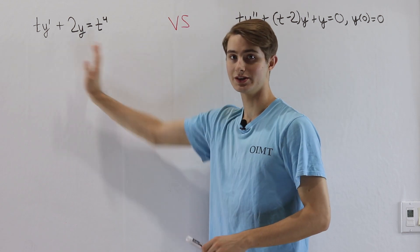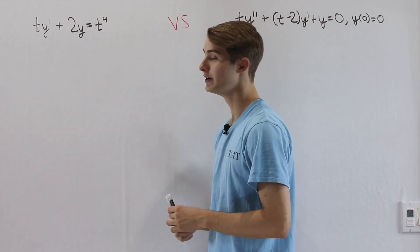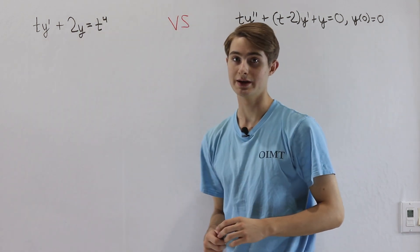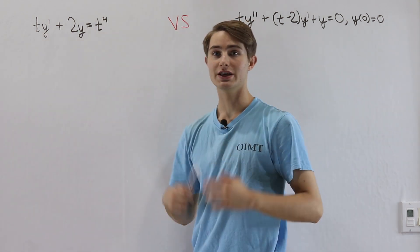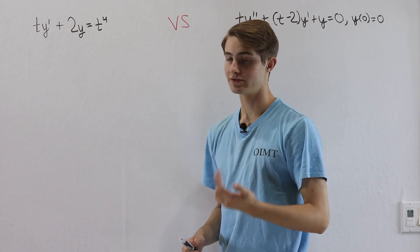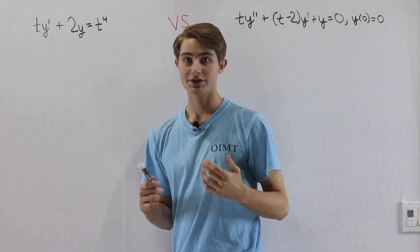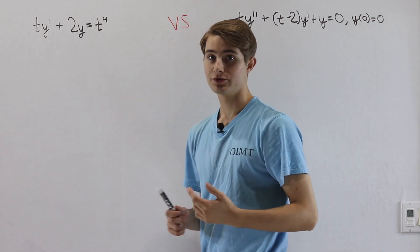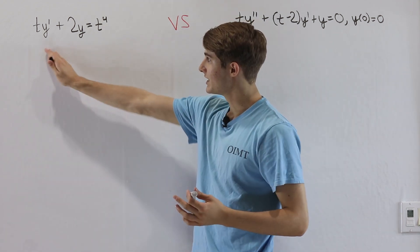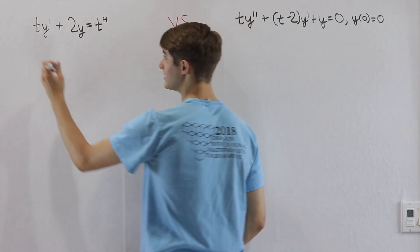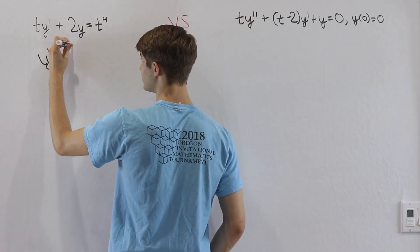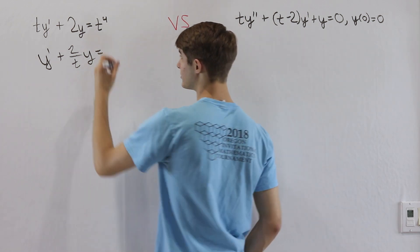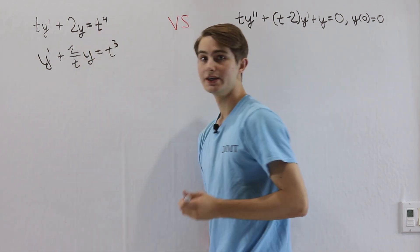Let's start by taking a look at the first differential equation. The highest derivative is a y prime, which means this is actually a first order linear differential equation. To see that more clearly, let's get y prime by itself with a coefficient of 1 by dividing everything by t. That gives us y prime plus 2 over t times y equals t cubed.